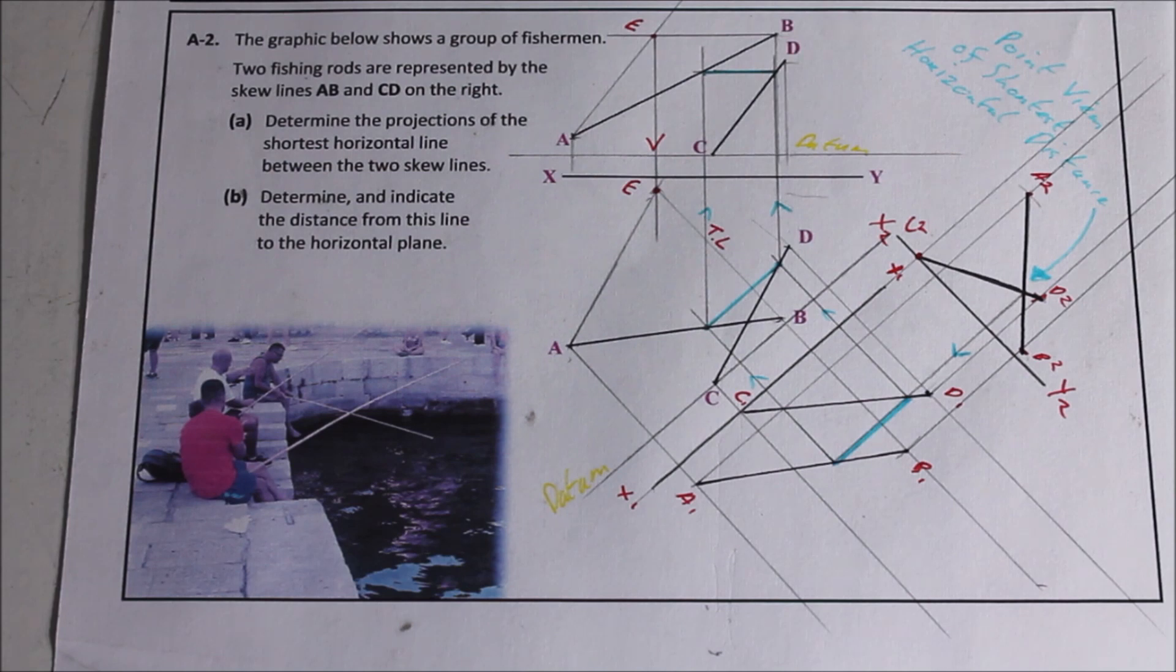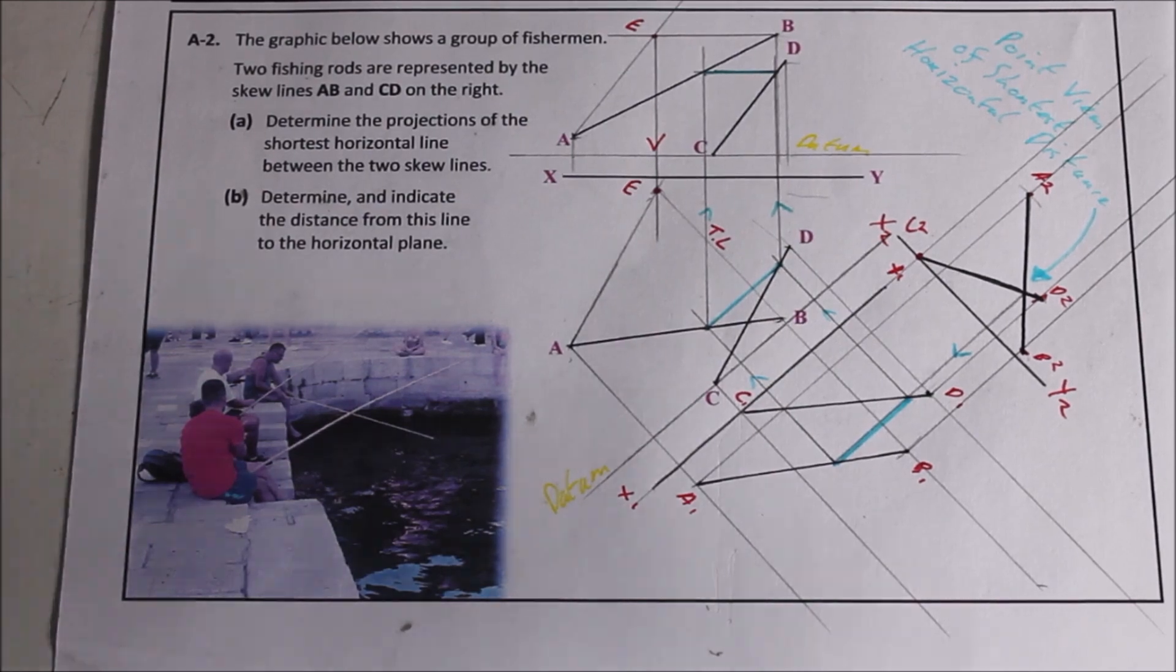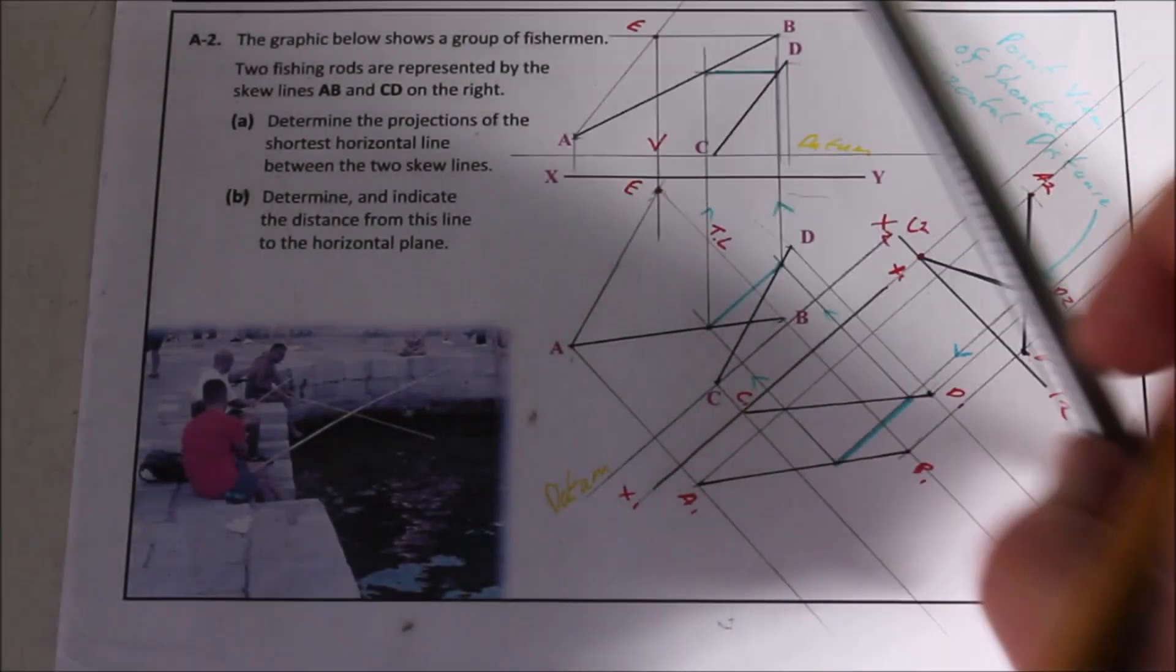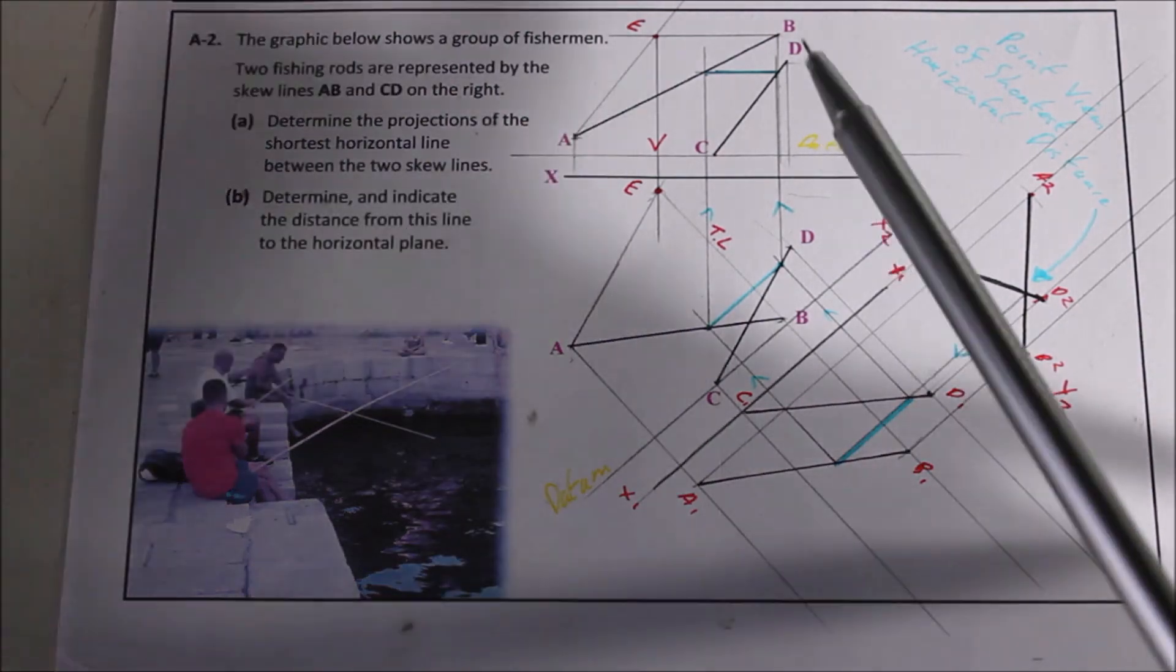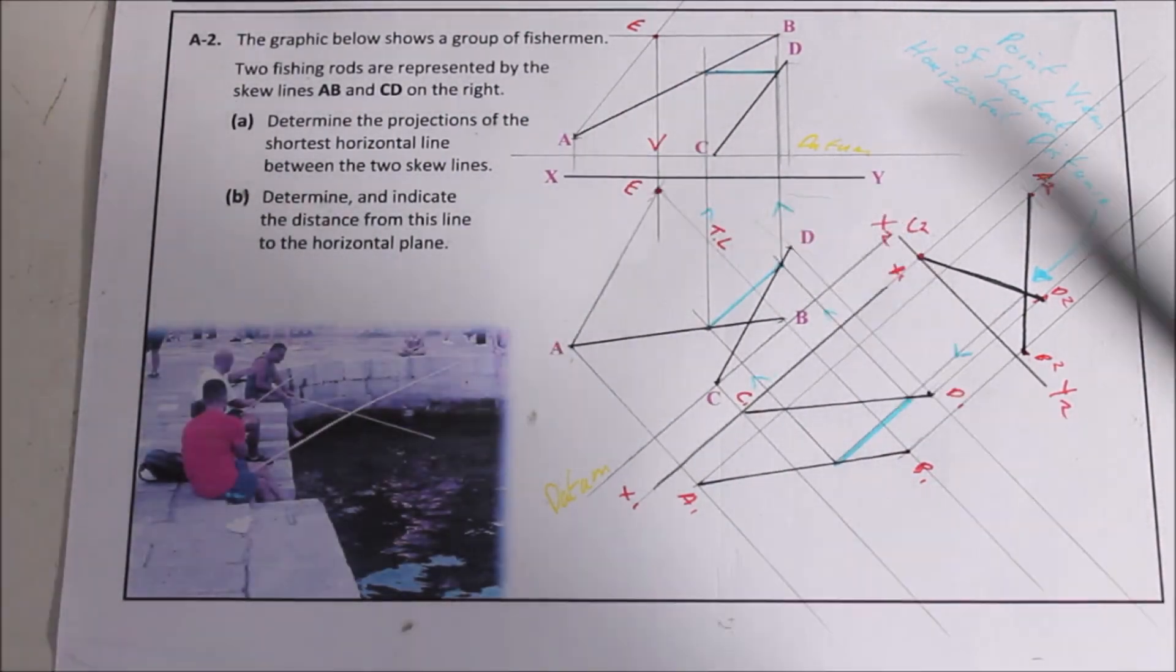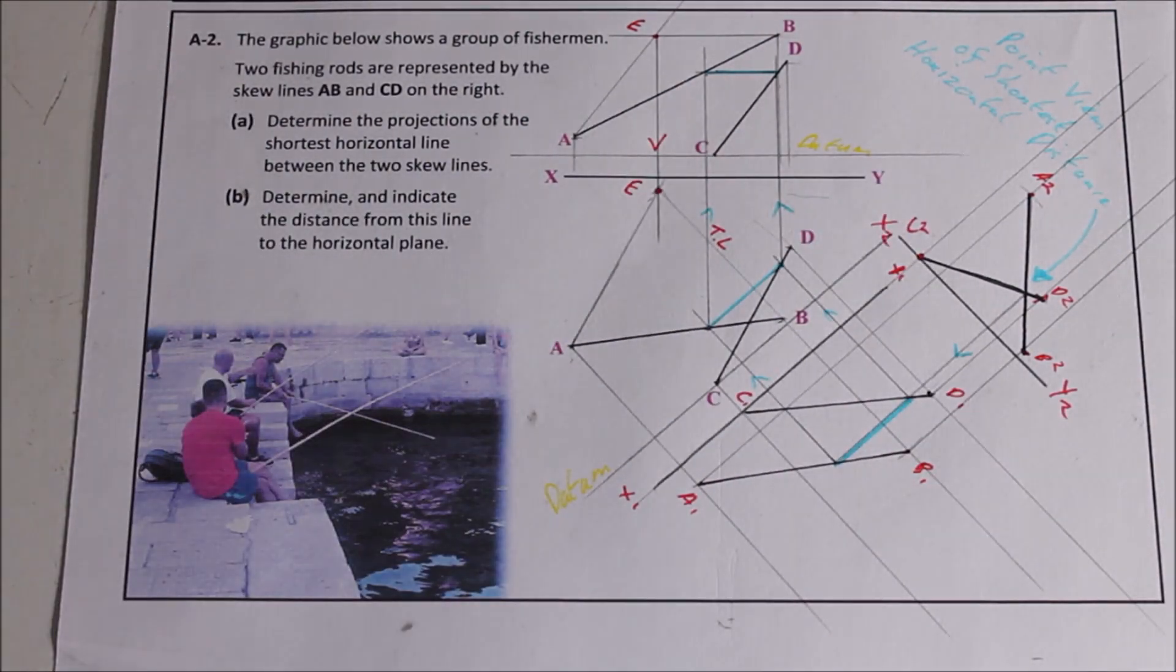Now for part B, it says determine and indicate the distance from this line to the horizontal plane. Now this is very easy for part B, but what they're trying to test here is, do you understand what the XY line represents? In the elevation, the XY line represents the ground plane, the horizontal plane, because it's horizontal. In plan, it represents the vertical plane, because it's vertically sitting upright.